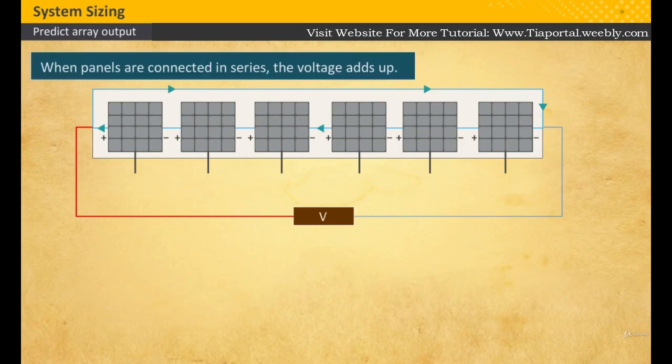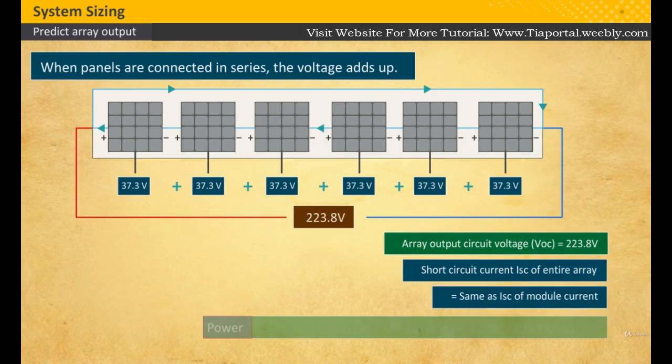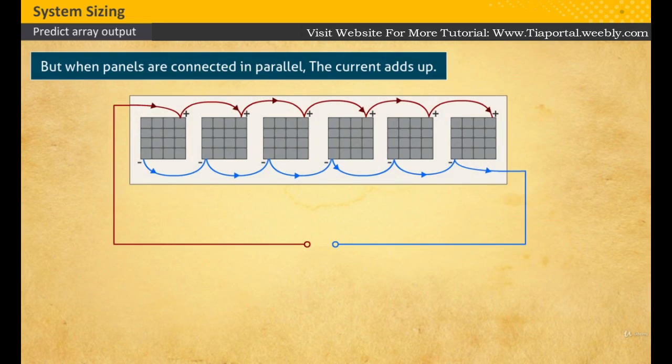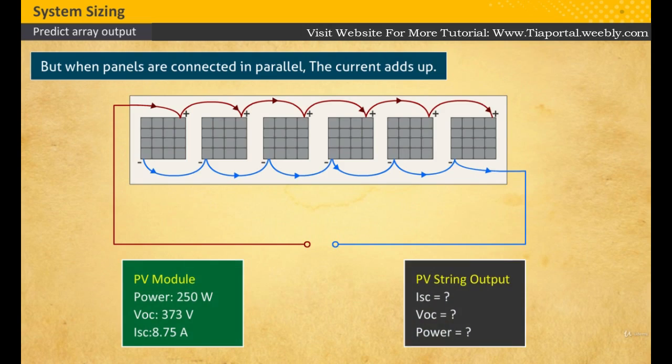The peak power rating will add up. But when modules are connected in parallel, the current adds up.